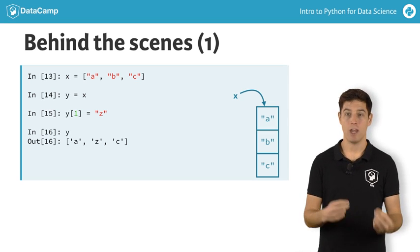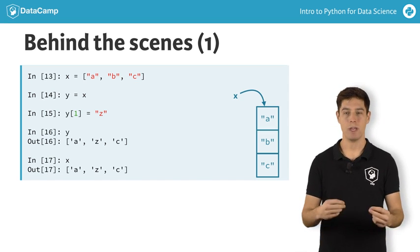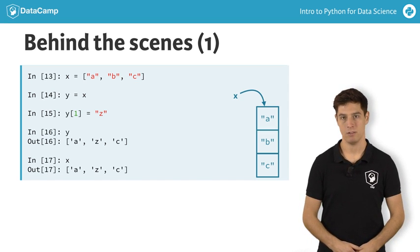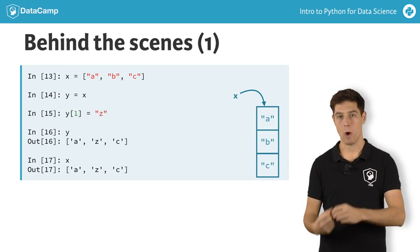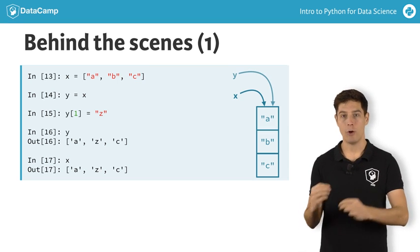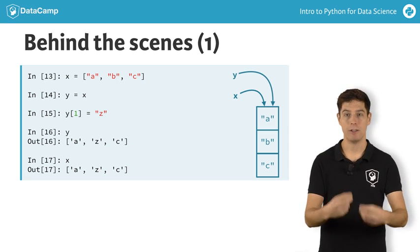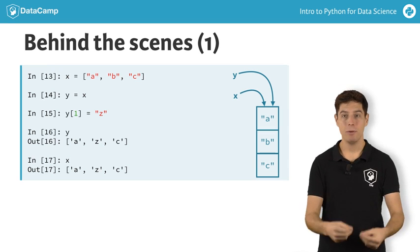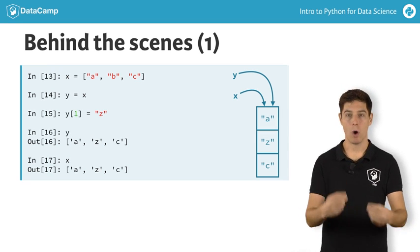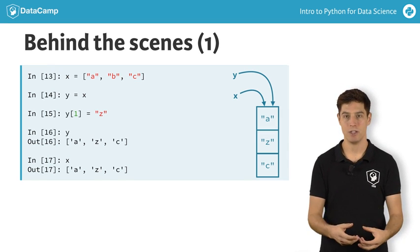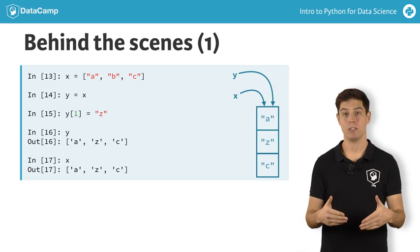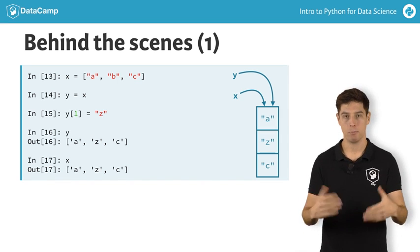The funky thing is that if you now check out x again, also here the second element has changed. That's because when you copied x to y with the equal sign, you copied the reference to the list, not the actual values themselves. When you're updating an element in the list, it's one and the same list in the computer memory are changing. Both x and y point to this list, so the update is visible from both variables.